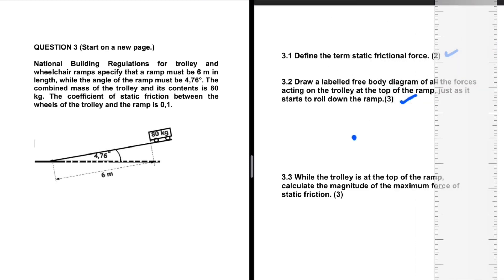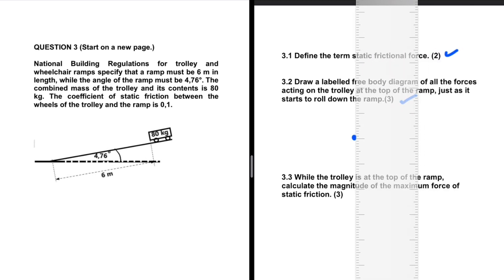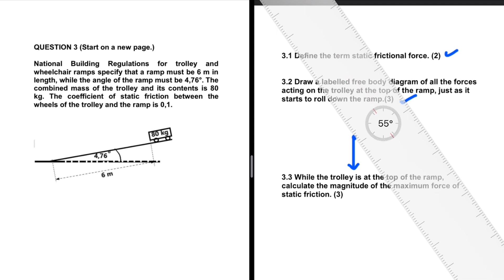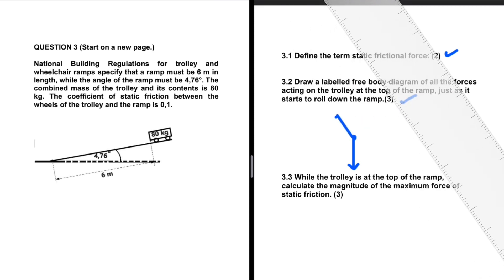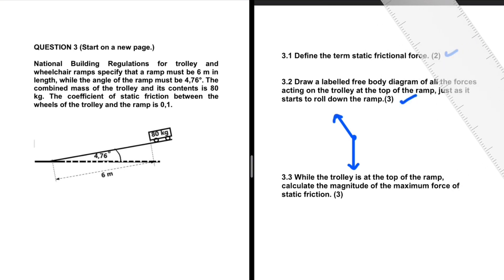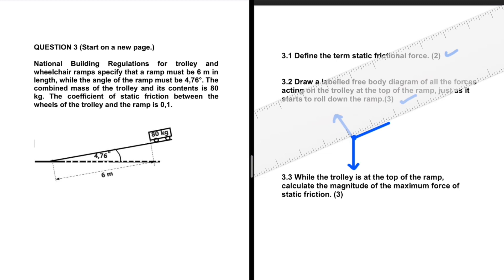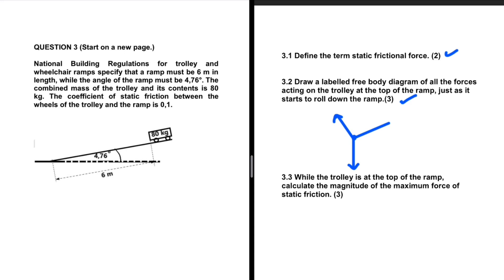Before we even start thinking about anything else, we know for sure that we have the weight, which points straight downwards regardless of the situation. The object is resting on a surface, so we shall have a normal force perpendicular to the surface. It is the labelled free body diagram for all the forces just as it starts to roll down the ramp. When it rolls down, we have the frictional force in the opposite direction. We can talk about why the frictional force will be pointing upwards.